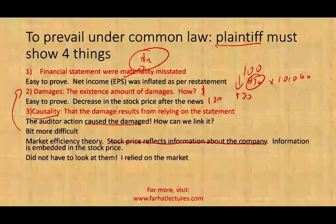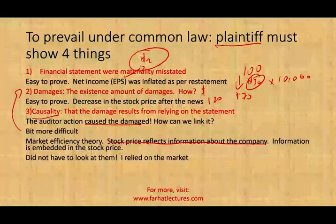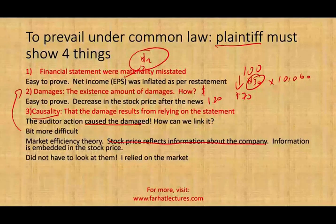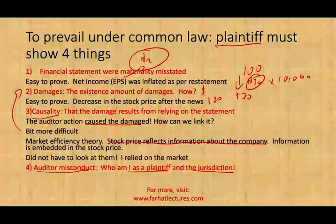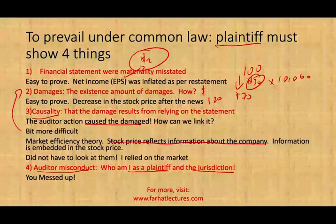The fourth thing you must show is the auditor misconduct. What type of misconduct — whether it's negligence or gross negligence — depends on who you are as a plaintiff and the jurisdiction in which you file the lawsuit. So you have to show that the auditor made a mistake and at what level: was it negligence, gross negligence? This depends on who you are and in which jurisdiction.